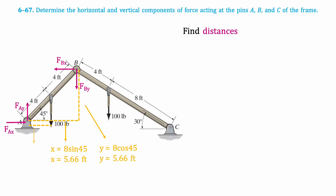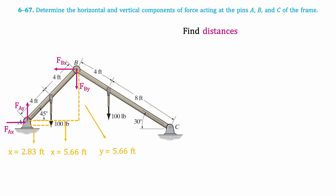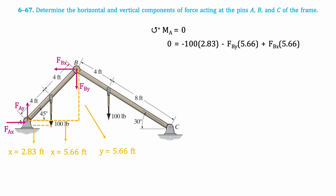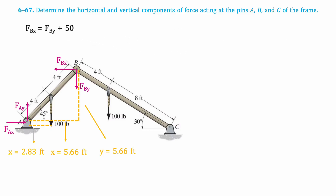The horizontal distance from point A to the 100 pound force is found in a similar way, where the hypotenuse is now 4 feet instead of 8, resulting in a distance of 2.83 feet. Next, we'll take the moment about point A. We get the following equation, which has two unknowns. We can't solve this equation just yet, so we'll isolate it for Bx and put it off to the side to use later.